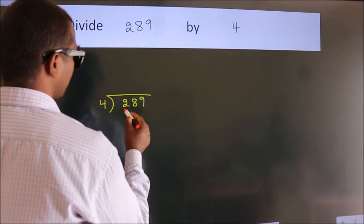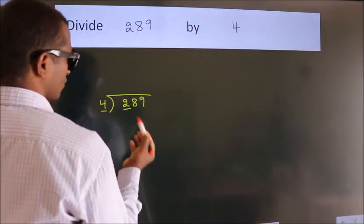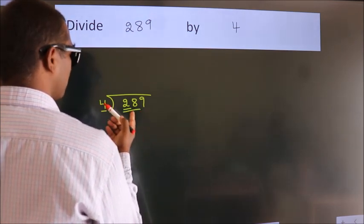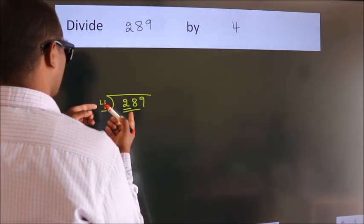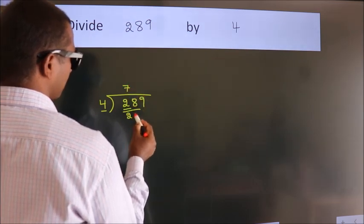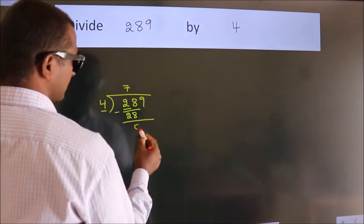Here we have 2. Here 4. 2 is smaller than 4, so we should take 2 numbers: 28. When do we get 28 in the 4 table? 4 times 7 is 28. Now we subtract and get 0.